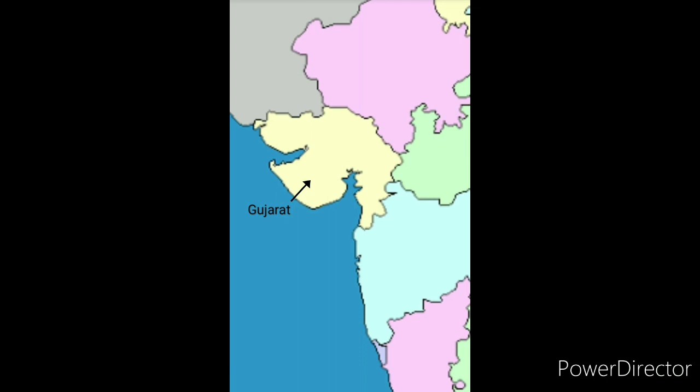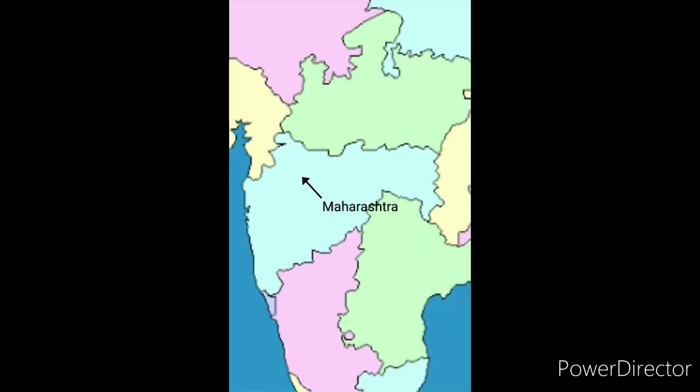In the west we have Gujarat and its capital is Gandhinagar. Below Gujarat we have Maharashtra and its capital is Mumbai.